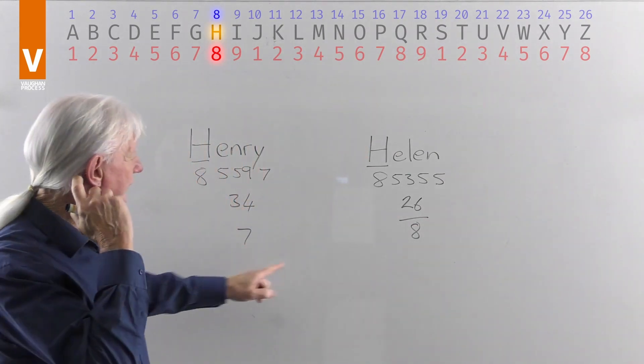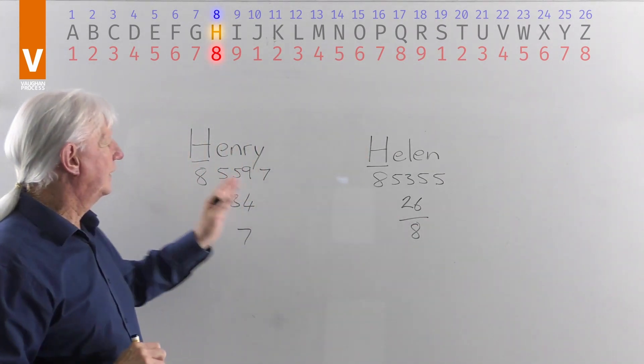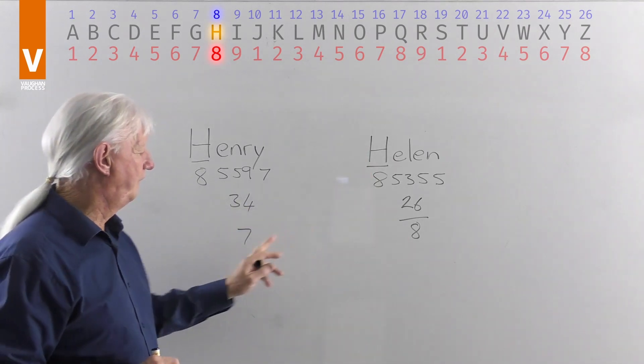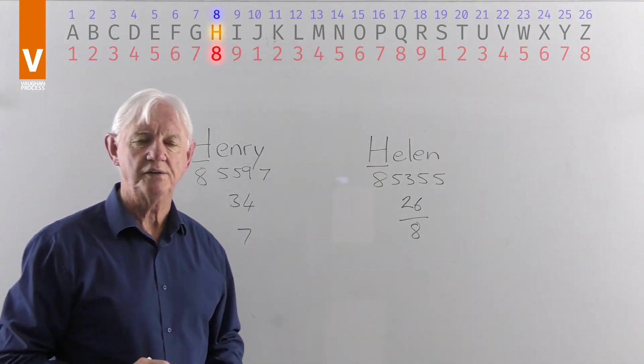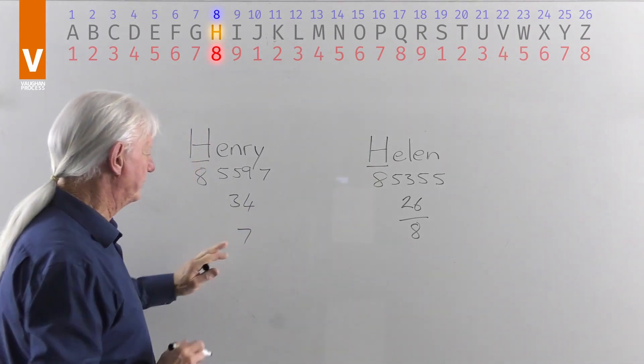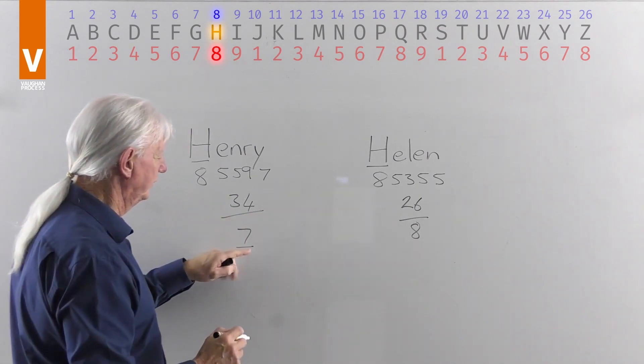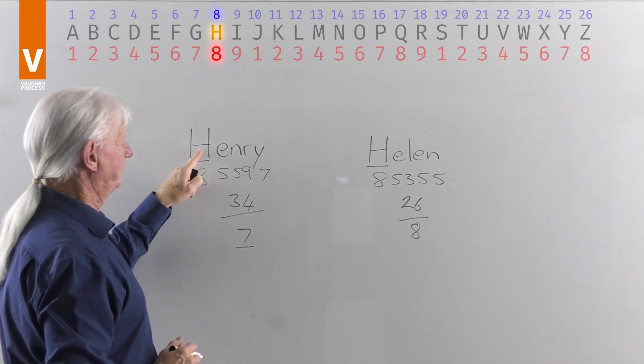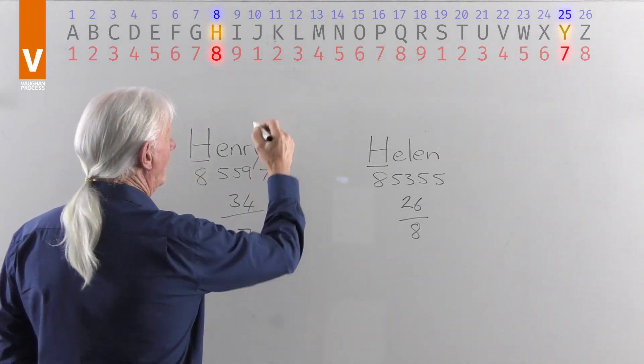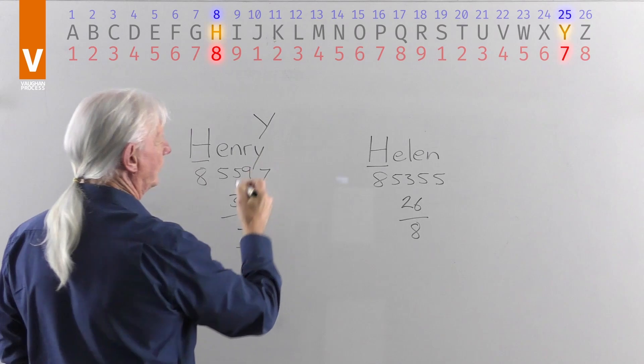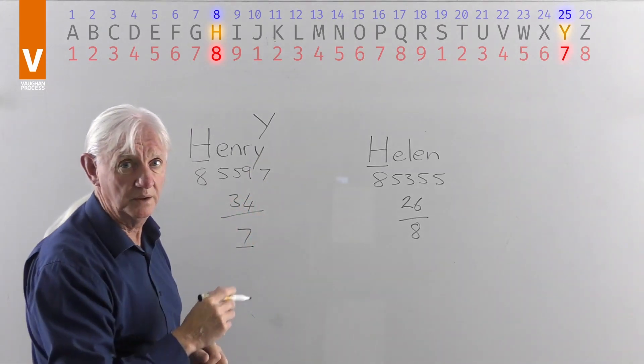So we've got 7 and 8, similar front on both of them, very different numbers underneath. The 7 itself represents wisdom, so this is a very smart person, very clever in what they do, they learn a lot from experience.